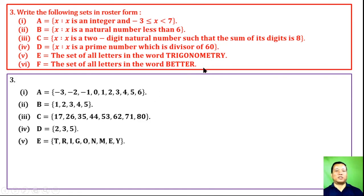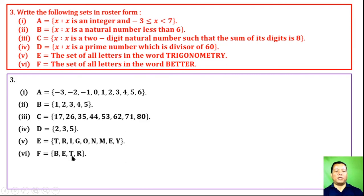F = the set of all letters in the word 'BETTER'. The letters are B, E, T, T, E, R. Since repetition is not allowed in roster form, F = {B, E, T, R}.